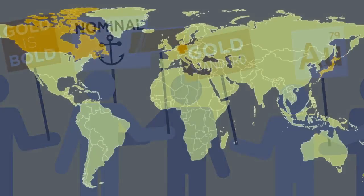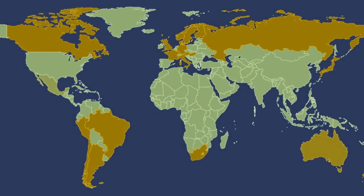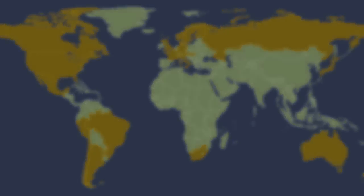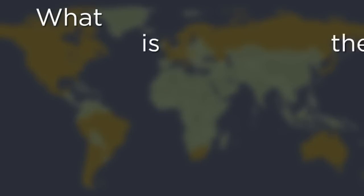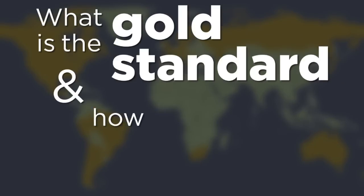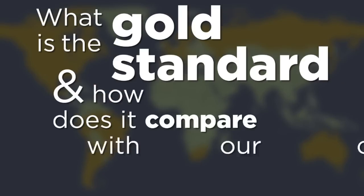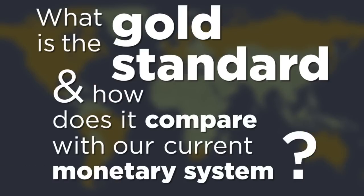At some point, most of the world's economies, including the United States, were based on a gold standard. But before we go any further, let's start at the beginning. What is the gold standard and how does it compare with our current monetary system? A gold standard is a monetary system where the government links the value of its paper money to a stock of gold reserves.